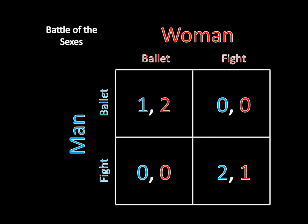There are two sustainable outcomes. First, if they both know they're supposed to go to the ballet — say they discussed it earlier that day — does anyone have incentive to change? No. If they're expecting to be at the ballet together, the man isn't going to randomly go to the fight, and the woman isn't going to switch either, because if she does she won't meet the man and gets zero instead of two. So she'll stick with the ballet at seven o'clock.